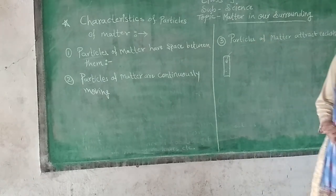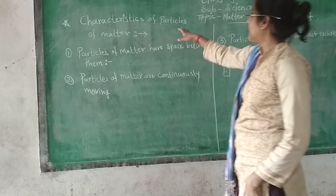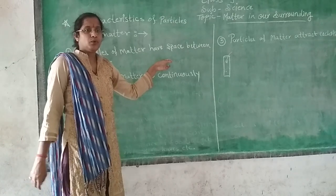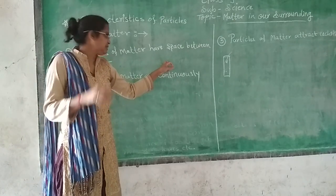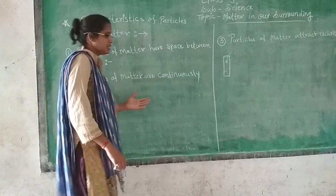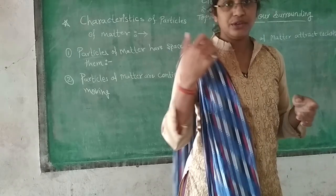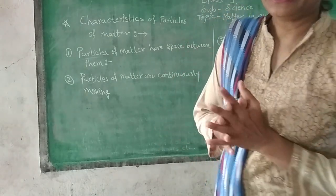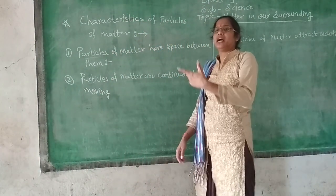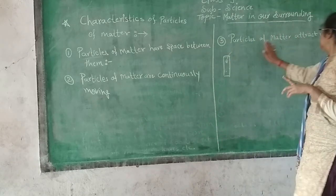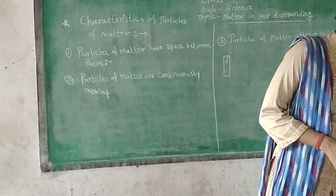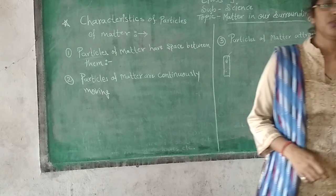From these three activities, we understand that the characteristics of matter are: first, particles of matter have space between them — as shown by the sugar and water activity; second, particles of matter are continuously moving — as seen with perfume or agarbatti; and third, particles of matter attract each other. That's all for today. In the next video, I will explain about the states of matter.